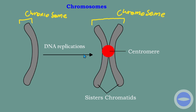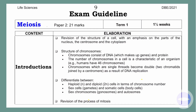You must know the difference, because it's very important. Sometimes they will ask you to label, so you must be able to label the structure when it's a single thread and when it's double chromatids held together by a centromere.